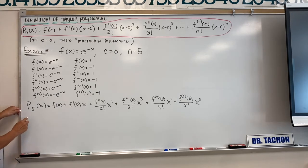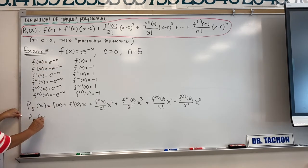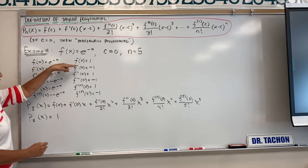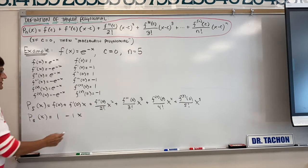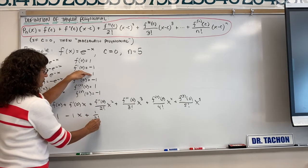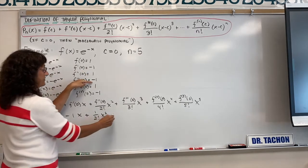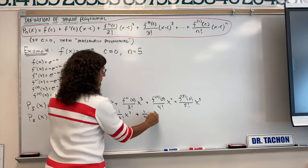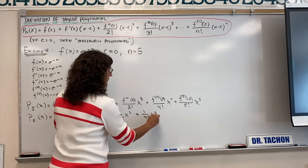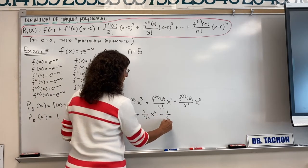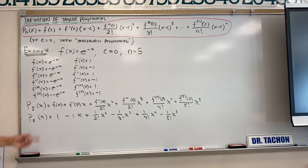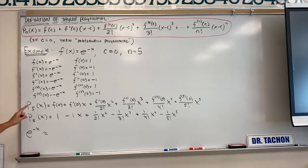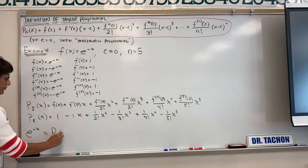Let's make our substitutions. Remember, we're approximating e to the negative x with these polynomials. F of zero is 1. F prime of zero is negative 1 times x. The second derivative evaluated at zero is positive 1 over two factorial times x squared. The third derivative gives negative 1 over three factorial times x cubed. Back to positive 1 over four factorial times x to the fourth. And then negative 1 over five factorial multiplied by x to the fifth.